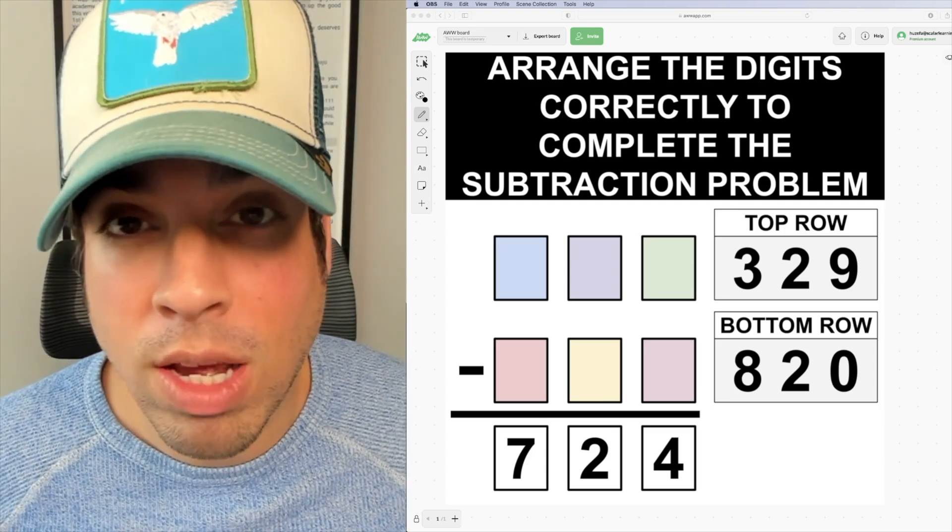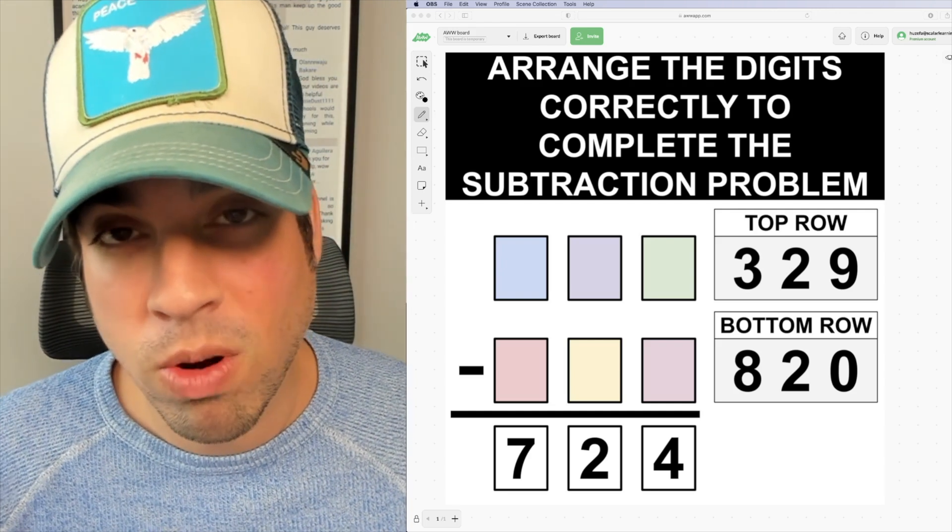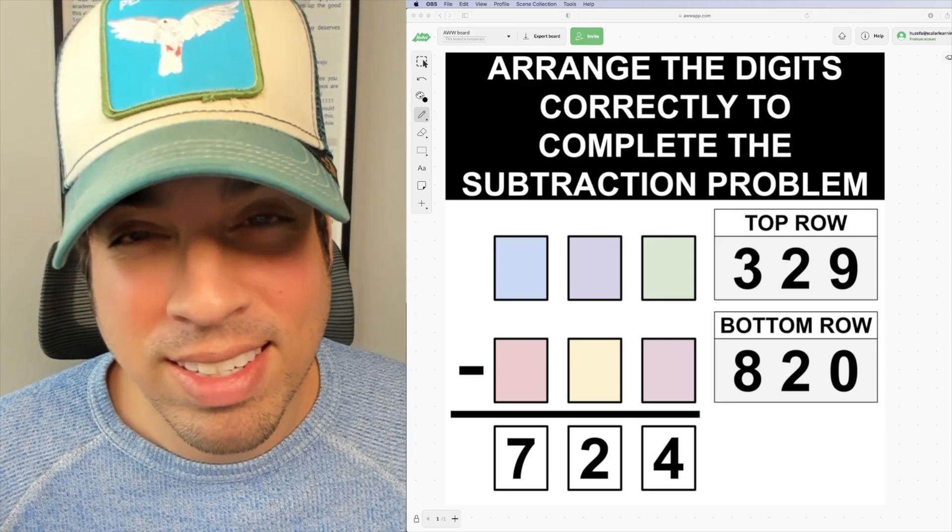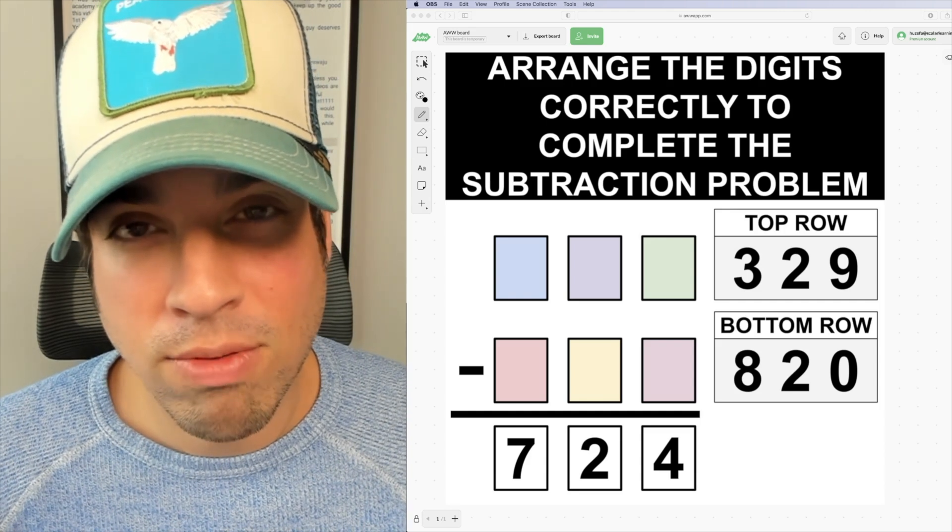Again, we have to arrange the digits so that once we complete the subtraction, we're left with 724. Go ahead and hit that pause button and see if you can figure it out. When you're ready, hit play and I'll give you the explanation.